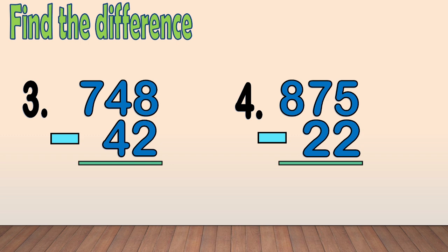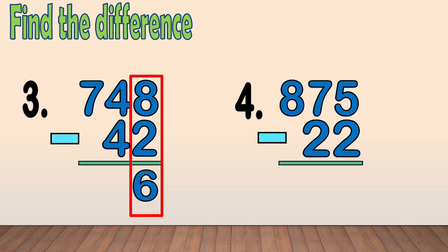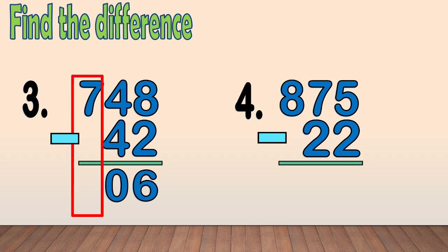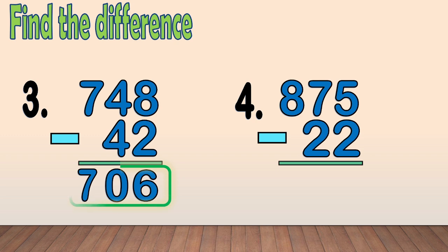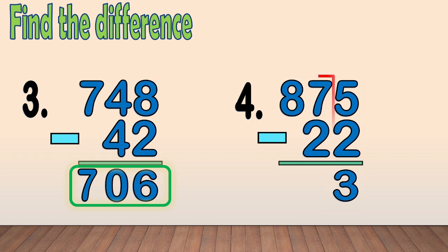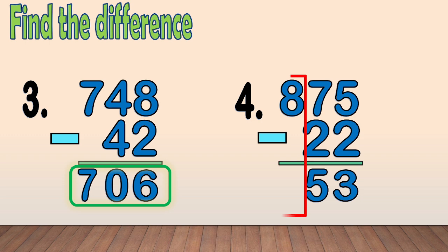Number three: seven hundred forty-eight minus forty-two. First, we subtract the ones. Eight minus two equals six. Next, we subtract the tens. Four minus four equals zero. Then, we bring down the hundreds digit, seven. Our answer is seven hundred six. Number four: eight hundred seventy-five minus twenty-two. First, we subtract the ones. Five minus two equals three. Next, we subtract the tens. Seven minus two equals five. Then, we bring down the hundreds digit, eight. Our final answer is 853.